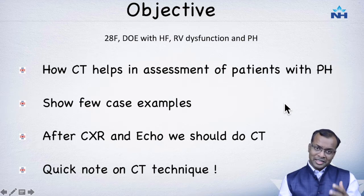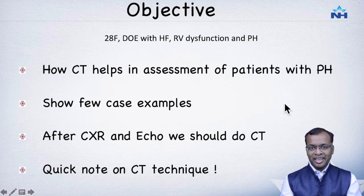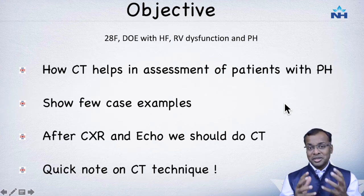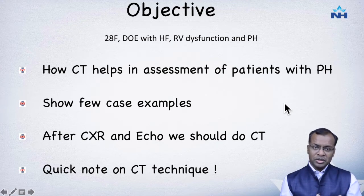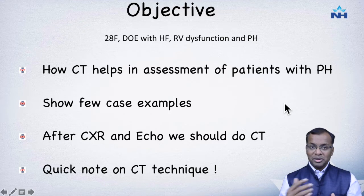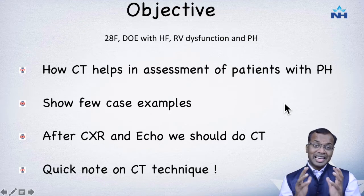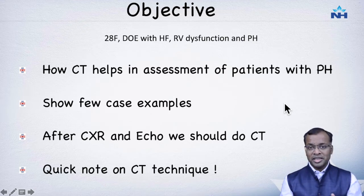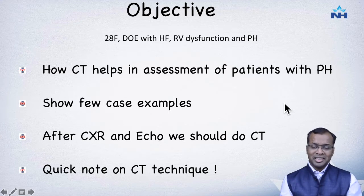All of this has to be put in context to the specific topic: we have a 28-year-old female with dyspnea on exertion, heart failure, RV dysfunction, and pulmonary hypertension on echo. So how are we progressing in diagnosing this patient, prognosticating this patient, and helping in her management?